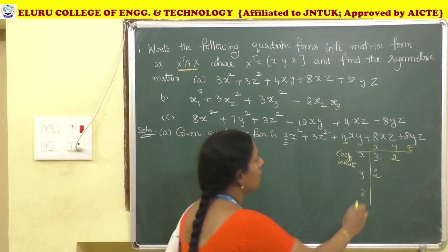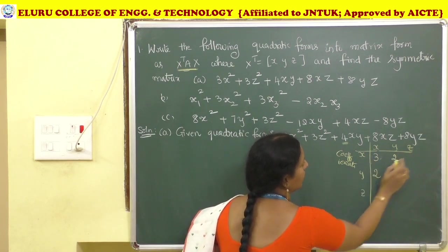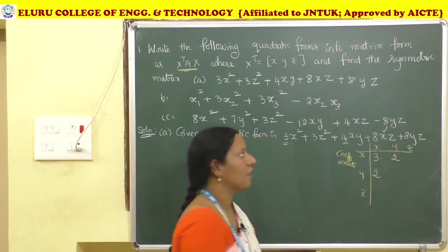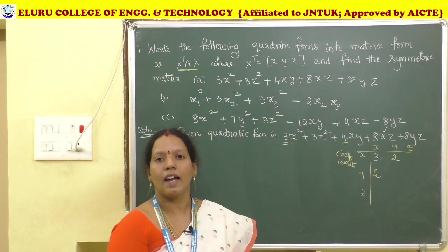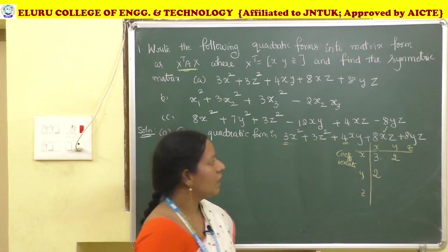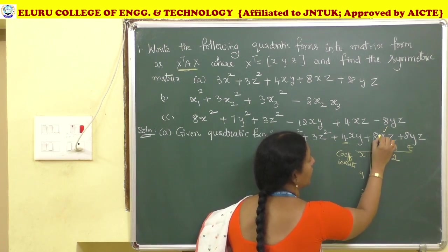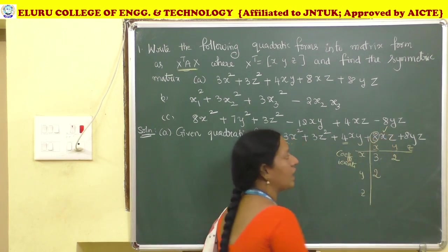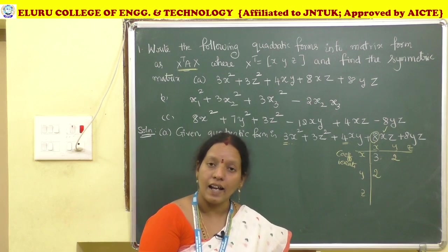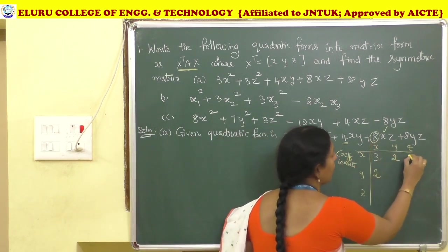For the XZ term, the coefficient is 8. So 8 divided by 2 gives 4, placed at the XZ and ZX positions. For Y², the coefficient is 0 since no Y² term appears in the given quadratic form.